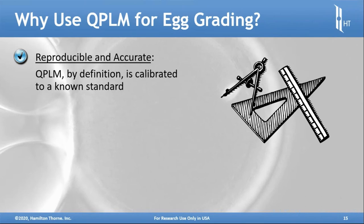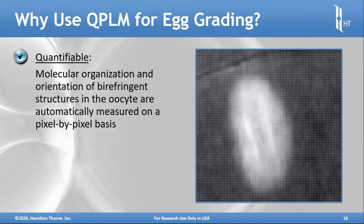Let's see if all the things necessary for a good grading scale apply to quantifiable polarized light microscopy. It's by definition calibrated to a known standard, so it gives data that's reproducible and accurate. Molecular organization and orientation of birefringent structures in the oocyte are automatically measured on a pixel-by-pixel basis, so anywhere you point your cursor you get a quantifiable dataset.